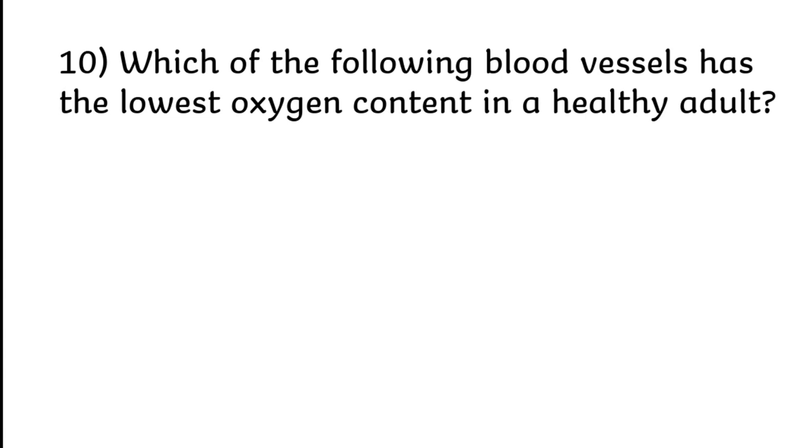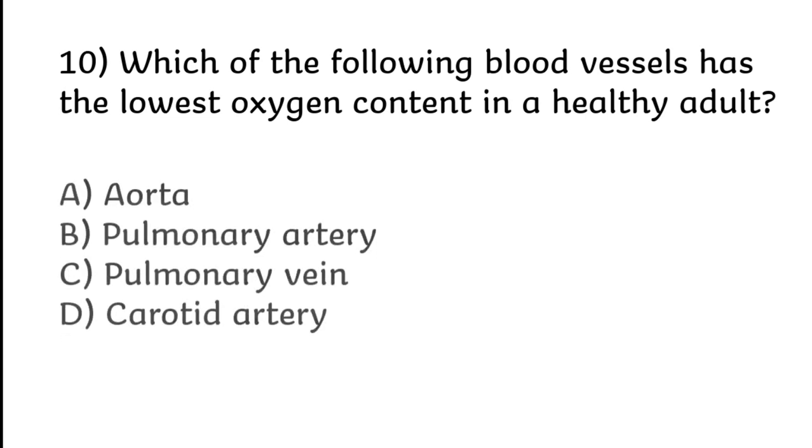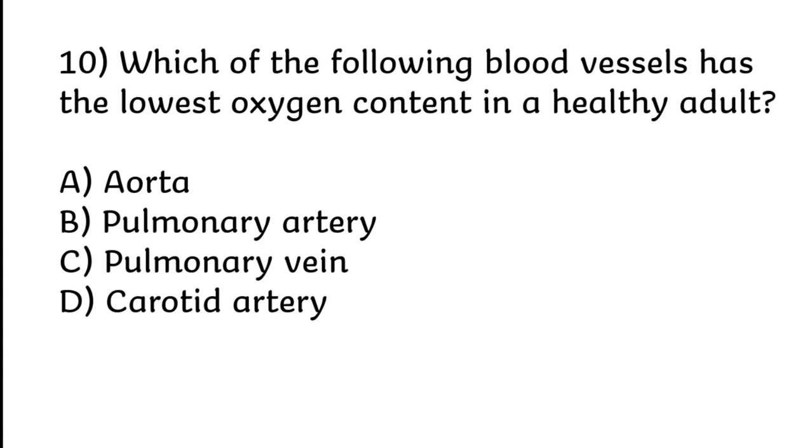Which of the following blood vessels has the lowest oxygen content in a healthy adult? Aorta, pulmonary artery, pulmonary vein, or carotid artery. Correct answer is option B, pulmonary artery.